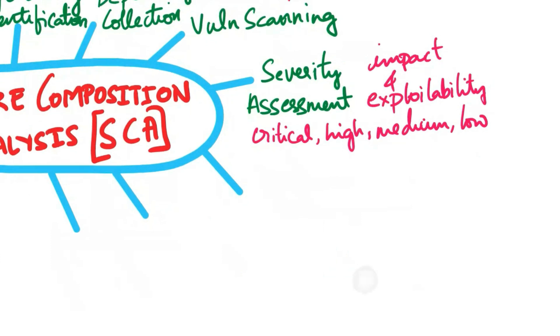Next step is version analysis. SCA tools analyze the versions of the third-party components being used in the software project. They determine whether there are newer, more secure versions available. Developers can use this information to decide whether to upgrade their dependencies to the latest secure versions.